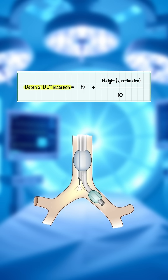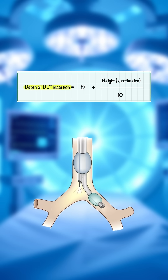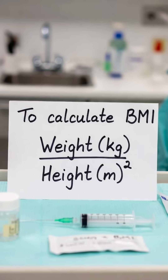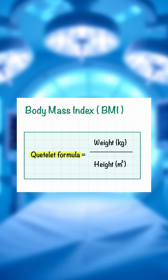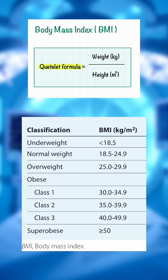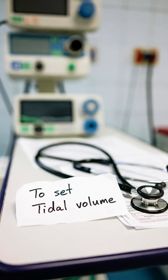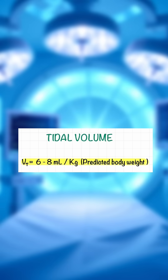The depth of DLT insertion is calculated by this formula. Next is to find the BMI of the patient and classify them into normal, overweight, obese, and super obese.